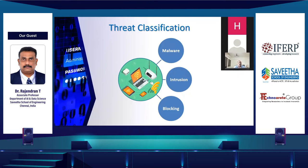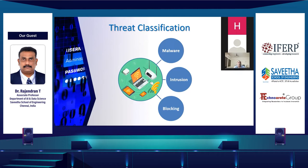These are the major threats, categorized into three types: malware, intrusion, and blocking. For example, ransomware attack is a very serious malware threat all industries are facing today. Attackers inject malware and encrypt the entire data in organizational resources, then blackmail them by asking a huge amount to decrypt the data. Injecting malicious codes and viruses all categorize under malware threats.